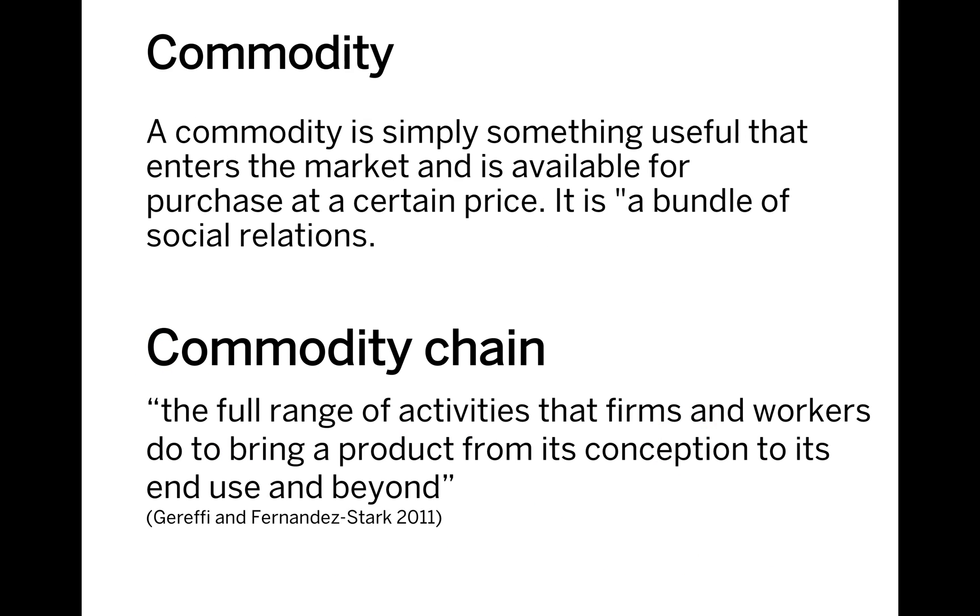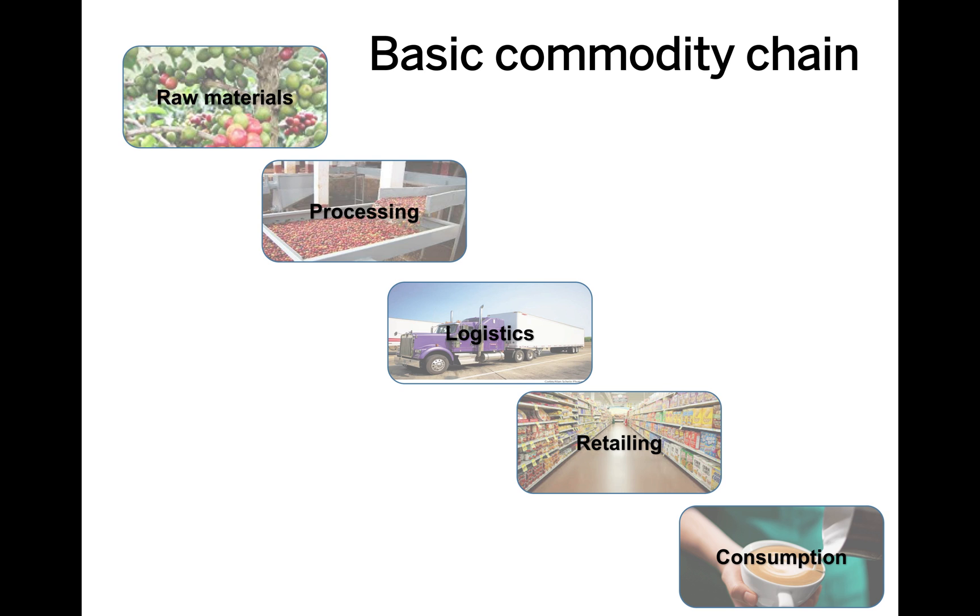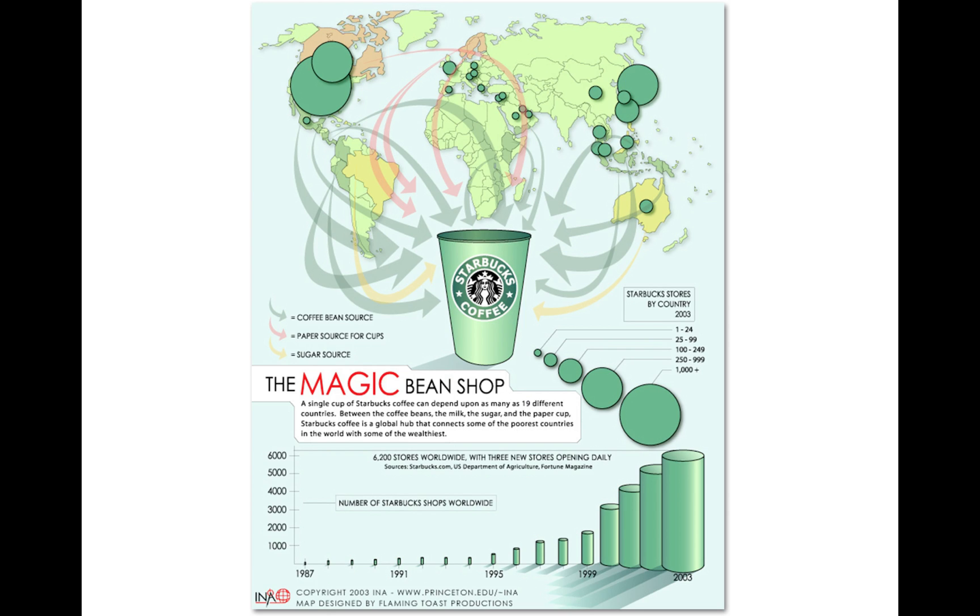In essence, a commodity is simply something useful that enters the market and is available for purchase at a certain price, but it is actually a bundle of social relations. The idea of commodity chains is to capture all of the range of activities that firms, workers, and institutions do to bring a product from its origin and conception to its end use and beyond. As you can see, the commodity chain starts from raw materials, processing, logistics, retailing, and consumption. This is the case of coffee - extracted as coffee beans, processed, transported, and finally comes to us as coffee.